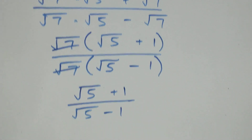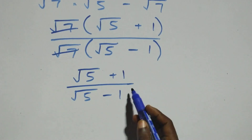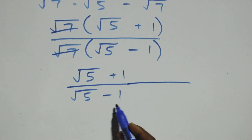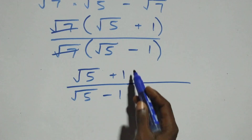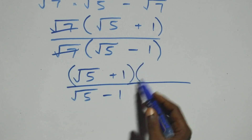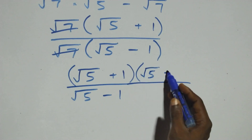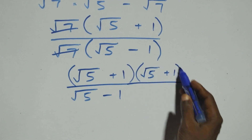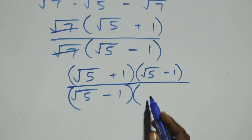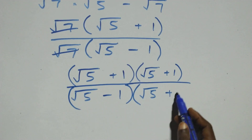The next step: we can rationalize this expression here. Multiply numerator and denominator by the conjugate of the denominator. Here we multiply this by root 5 plus 1. Also multiply the denominator by the conjugate, which is also root 5 plus 1.